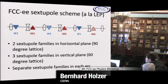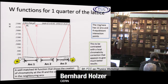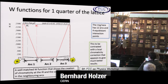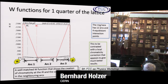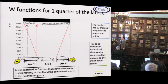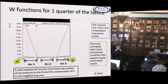The chromaticity correction is done with two families of sextupoles — two families in the horizontal and three in the vertical because we have different phase advance. The results show, for instance with red, that chromaticity is actually being reduced as we go from one IP to the other IP, through the arcs. The ring has 12 arcs and four equidistant interaction points. A well-matched W function shows the growth of chromaticity at the IR and its compensation during one arc. This works well.